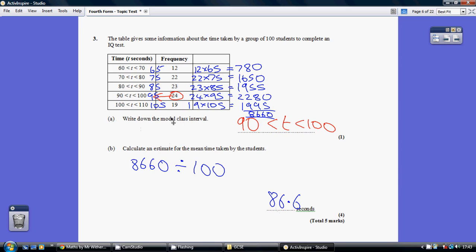Now, part A is different. On this occasion, we're being asked for the modal class interval. That's just what happened most times. We're looking at the frequencies. What happened most times? Well, something happened 24 times. What happened 24 times? Well, the students spent between 90 and 100 minutes taking the IQ test. So, we copy that down as our final answer for part A.